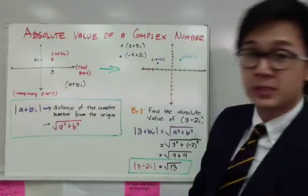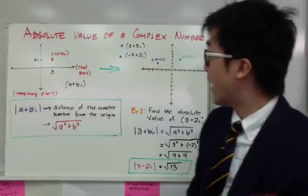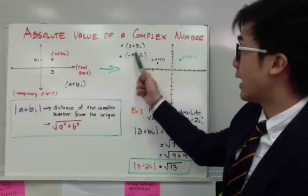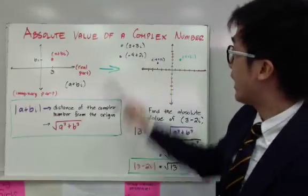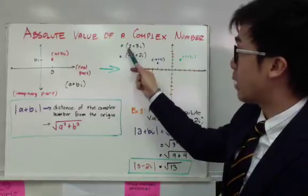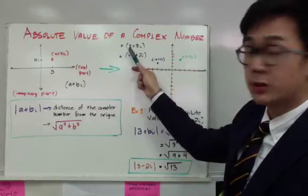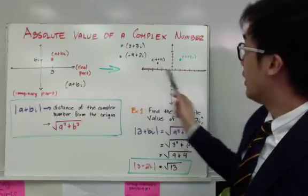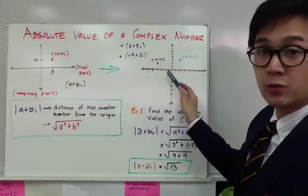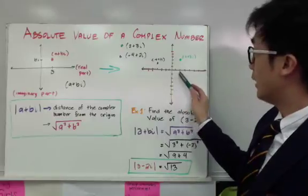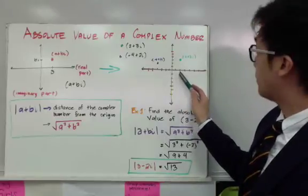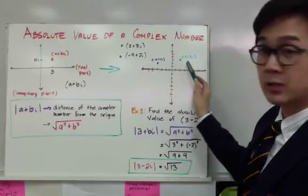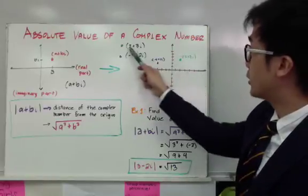To give a specific example of graphing complex numbers, we have 2 plus 3i and negative 4 plus 2i. To graph our first complex number, we have positive 2 for a, the real part, and positive 3i for our imaginary part. So positive 2 — you count 2 from 0, and you count 3 up, and this is the point of your complex number, or the graph of your complex number, 2 plus 3i.